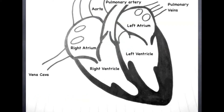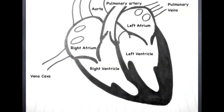After contraction of both the atria and the ventricles, relaxation of the heart occurs and this is known as diastole. Blood is able to flow in and refill the atria.